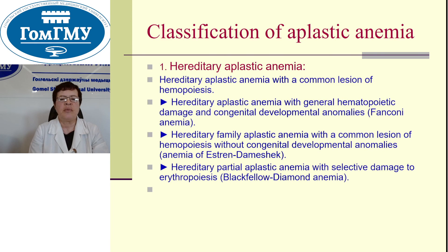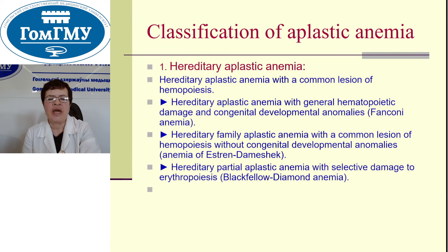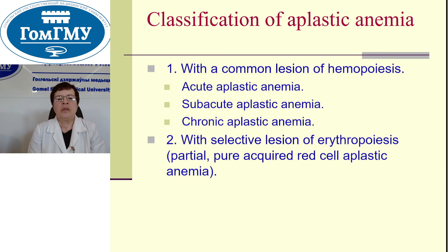Hereditary aplastic anemias. Hereditary aplastic anemia with a common lesion of hemopoiesis. Hereditary aplastic anemia with general hemopoietic damage and congenital developmental abnormalities — such as Fanconi anemia — and hereditary familial aplastic anemia with a common lesion of hemopoiesis without congenital developmental abnormalities, for example anemia of Aase syndrome. Hereditary partial aplastic anemia with selective damage to erythropoiesis, for example Blackfan-Diamond anemia.